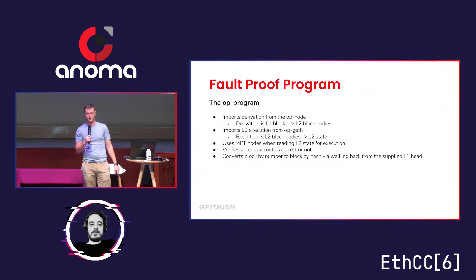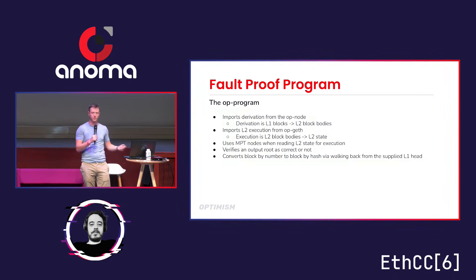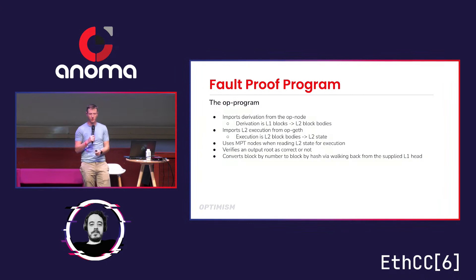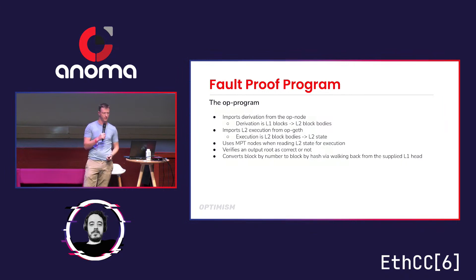There's a technicality around what it actually does, which is verifying the output root as correct or not — a slight difference from the OP node program which just executes blocks, but that makes it fit in with the proof system. There's also a fun trick: a block-by-number lookup can't actually be done in this environment because you don't have a proof on it, but you can convert it into a block-by-hash lookup by walking back the chain. There are a couple of sneaky things like that where we have to intercept calls and turn one type of call into another.